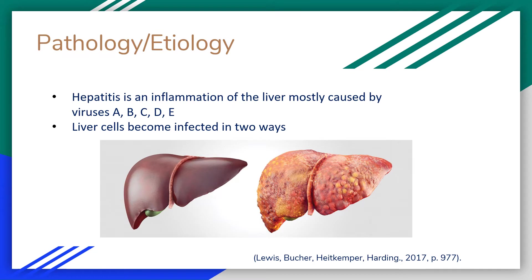The pathology of hepatitis is that liver cells become targets of the virus in two ways: either through direct action such as HCV, or through immune response such as HBV. During acute hepatitis, a large amount of liver cells become destroyed, which leads to dysfunction of the liver. Mechanisms such as bile production, blood coagulation, blood glucose, and protein metabolism are also affected.